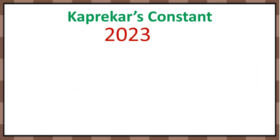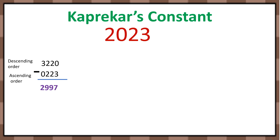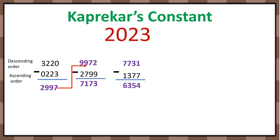Now let's consider the current year 2023 — it's a 4-digit number. First, arrange in descending order: 3220. Write the same digits in ascending order: 0223. Subtract, and we get 2997. Repeat the process — descending minus ascending — and the result is 7173. Again repeat: 7731 minus 1377 gives 6354. Repeat once more — descending minus ascending — and the result is 3087.